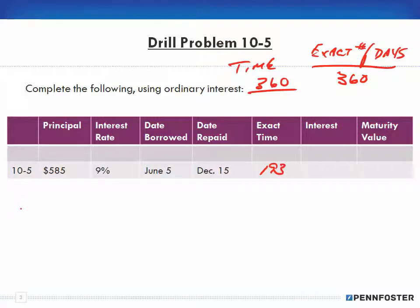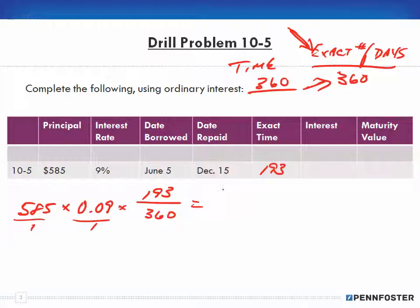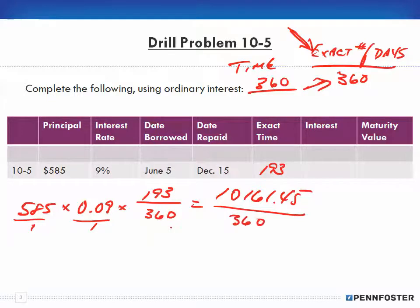Now we find the interest: $585 times 0.09 times 193 days over 360 — using ordinary interest. Multiplying the numerators: 585 × 0.09 × 193 = 10,161.45. The denominator is 1 × 1 × 360 = 360.